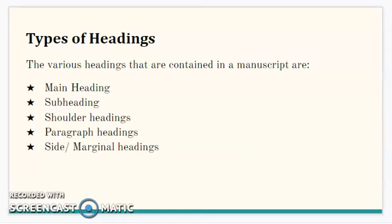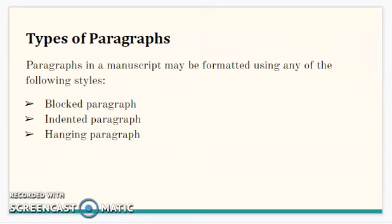Greater details are given about these in other videos. Now we have paragraphs. Paragraphs in a manuscript may be formatted using any of the following styles: you have a blocked paragraph, where the paragraphs are flushed to the left margin. You have an indented paragraph, where the first line of the paragraph goes in at 0.5 inches. And you have a hanging paragraph, where all lines except the first line of the paragraph are indented at 0.5 inches.